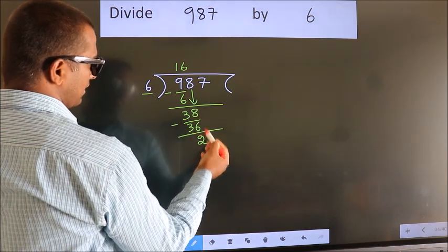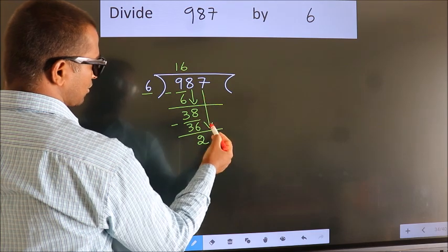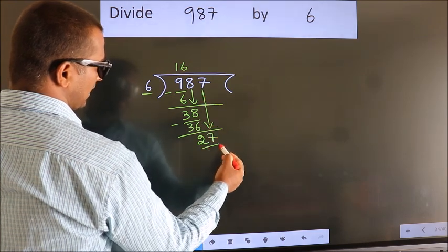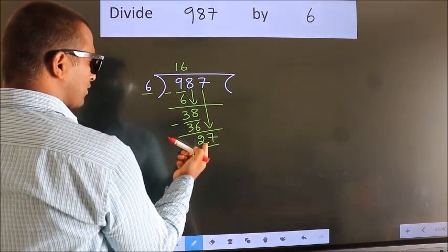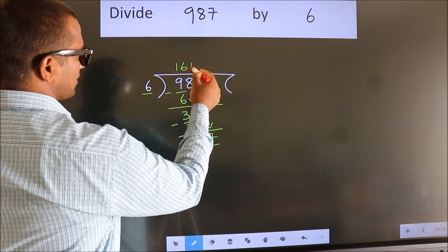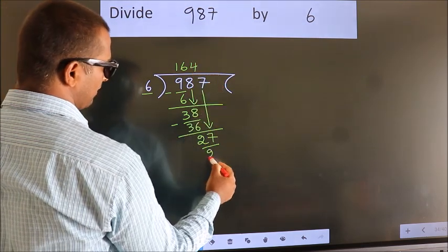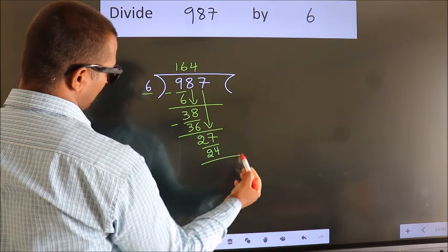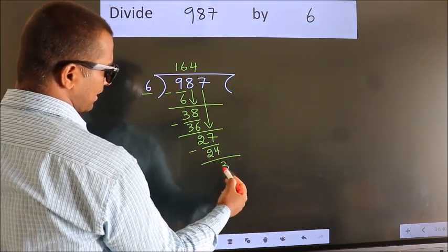After this, bring down the beside number. So 7 down, so 27. A number close to 27 in the 6 table is 6 fours, 24. Now we subtract. We get 3.